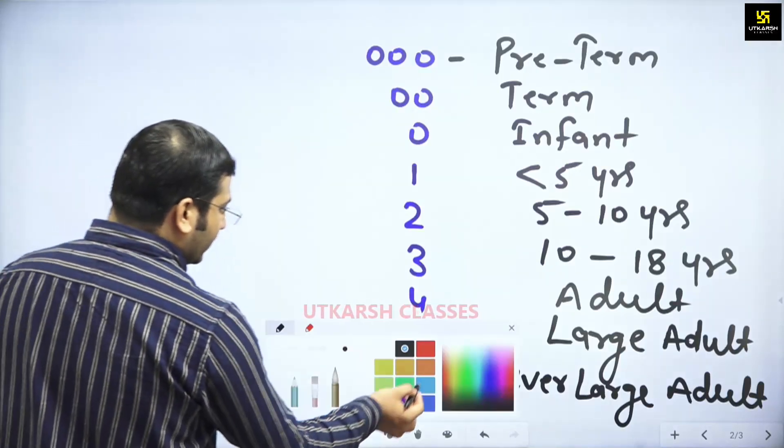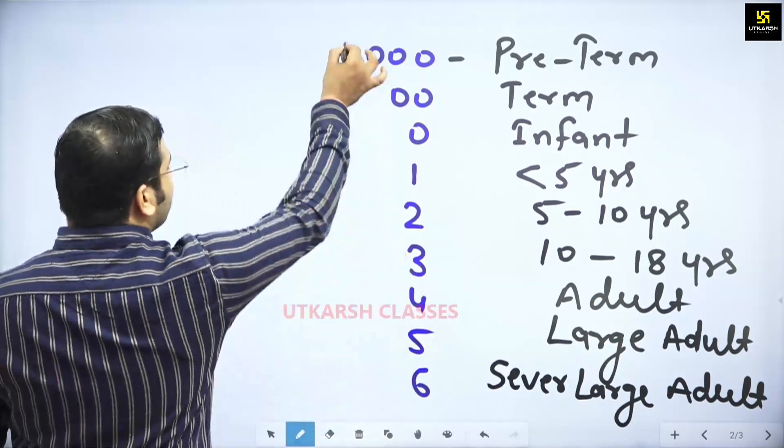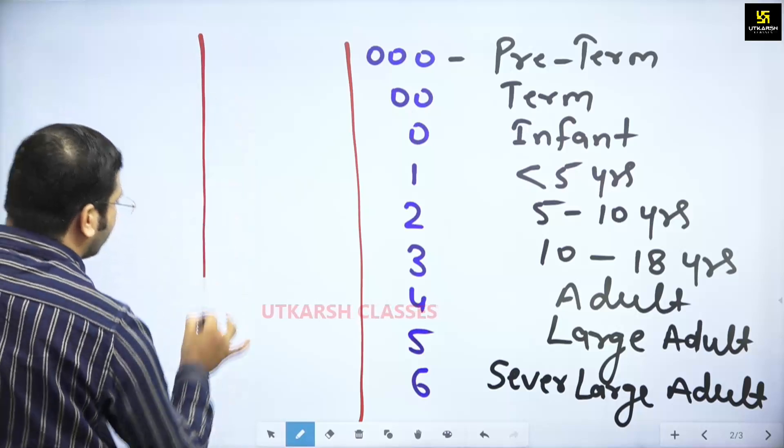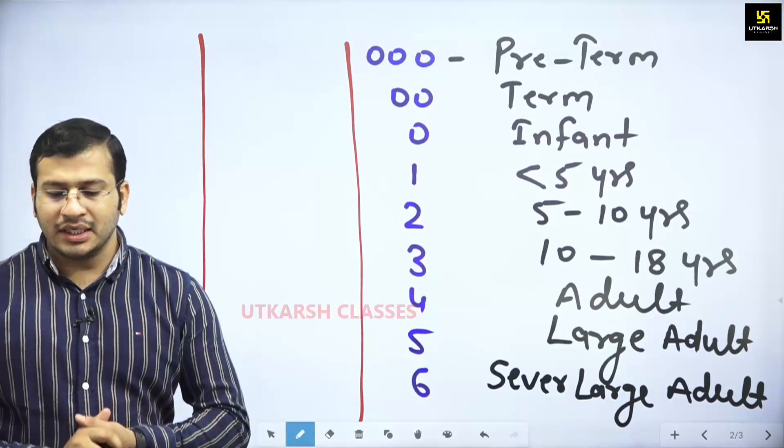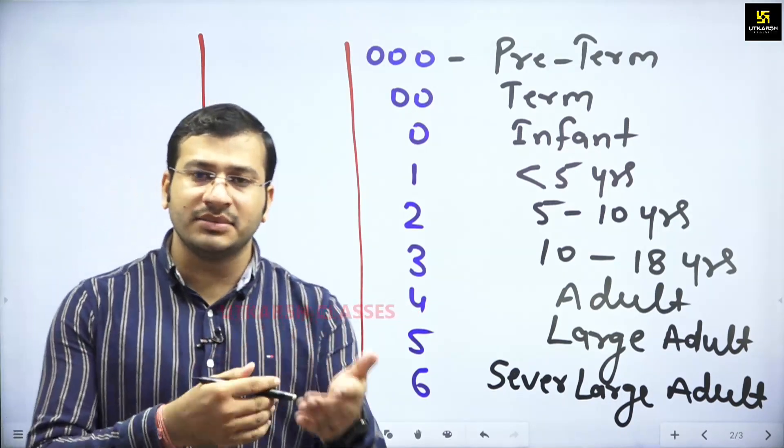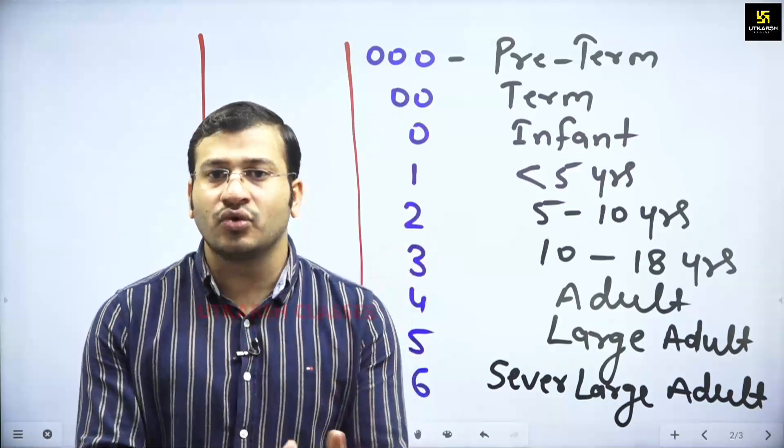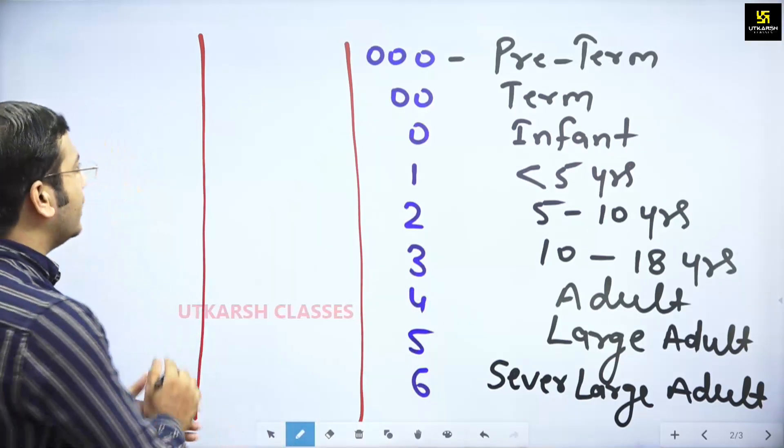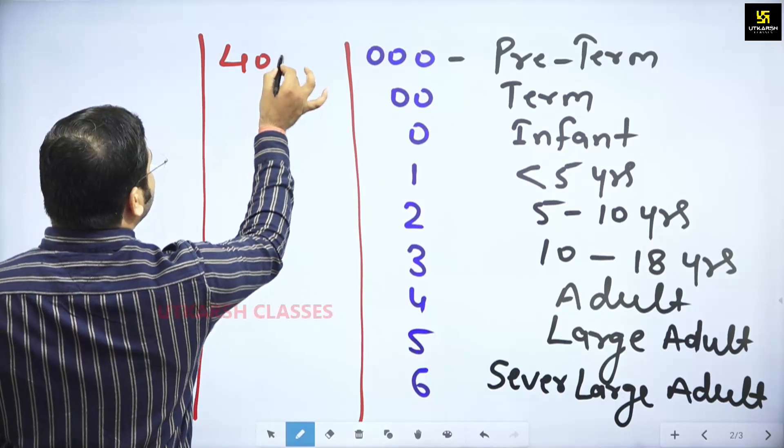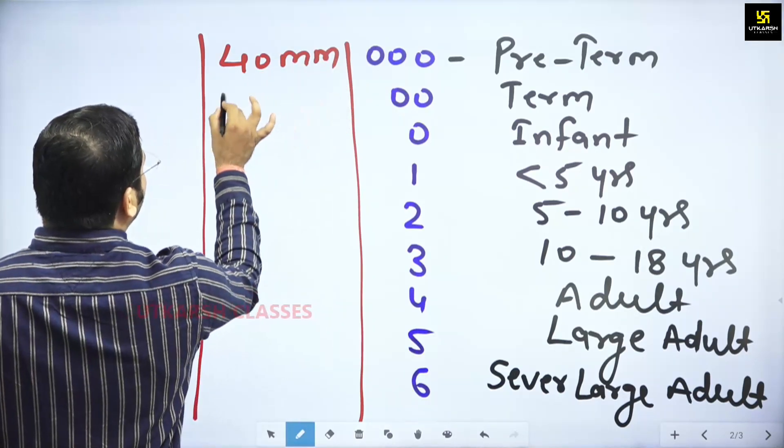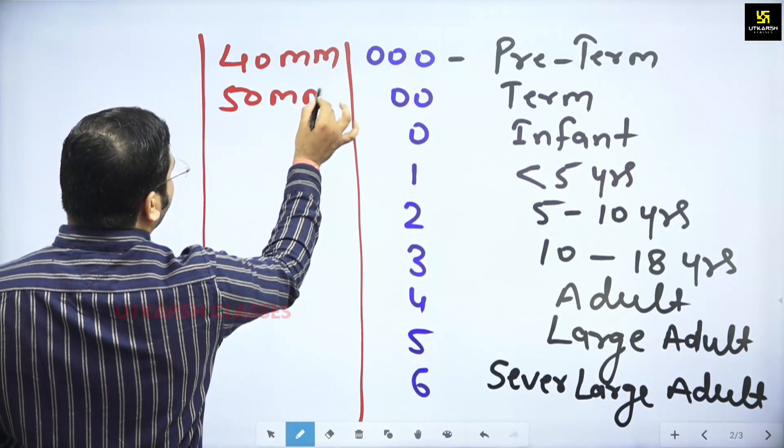What is the diameter? If we see the diameter, we can't keep it, we can say it. You have to go from 40 to 120. How many numbers? This is 40 mm, this is 50 mm.